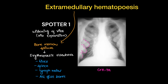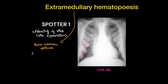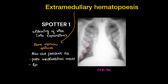This extramedullary hematopoiesis can also present as posterior mediastinal masses, as epidural soft tissue, and as peritoneal nodules.